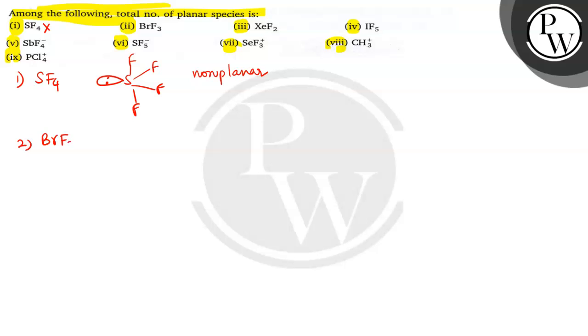Second one is BrF3. BrF3 is an interhalogen compound of AX3 type and having Br with the bent T-shape. So all this fluorine and bromine are in one plane. So this is with the two lone pairs. This is bent T-shape and this is planar. So the second one is planar.